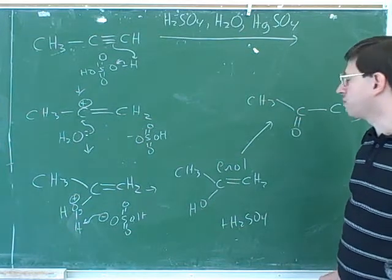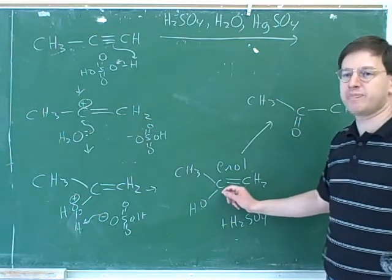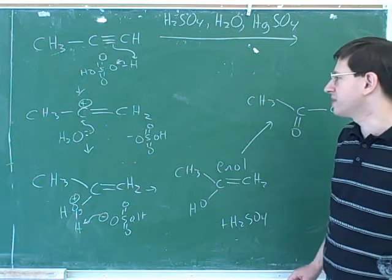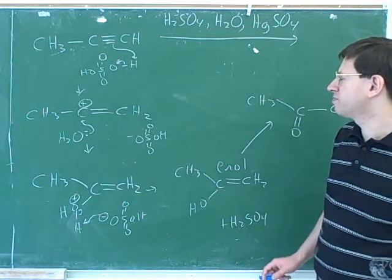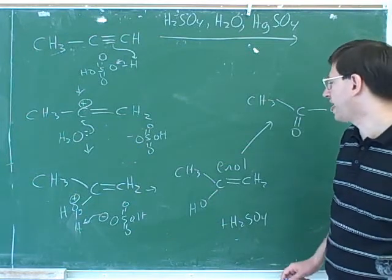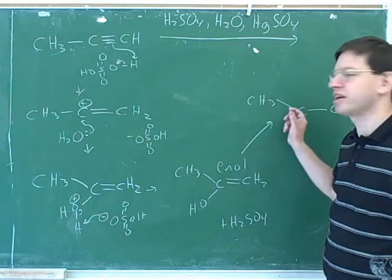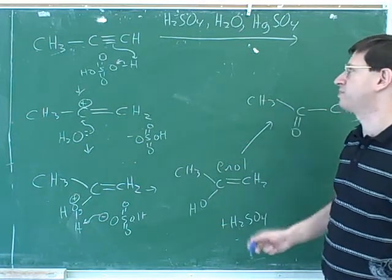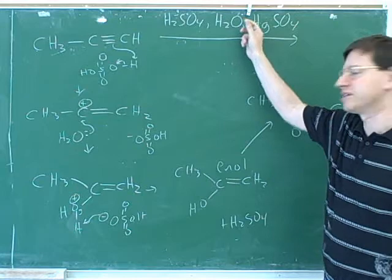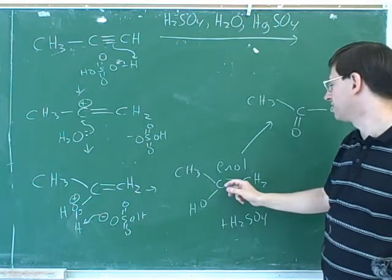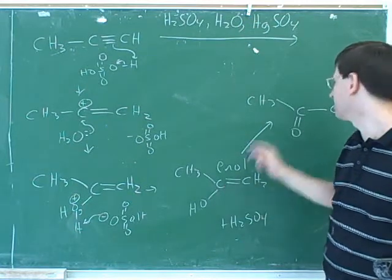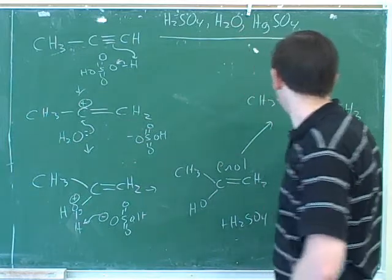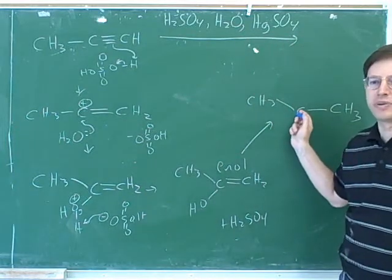Somebody was asking whether this could happen twice. Well, maybe it wouldn't happen twice because before the second reaction had a chance to happen, maybe the enol would tautomerize into this carbonyl. So maybe that's the reason why the textbook doesn't talk about this reaction happening twice — maybe this enol doesn't last long enough to get attacked the second time before it turns into the carbonyl.